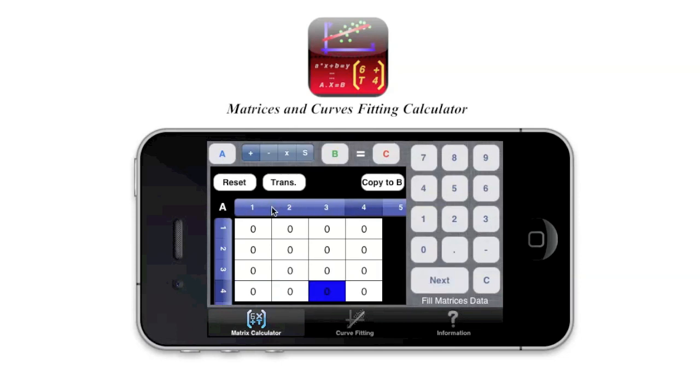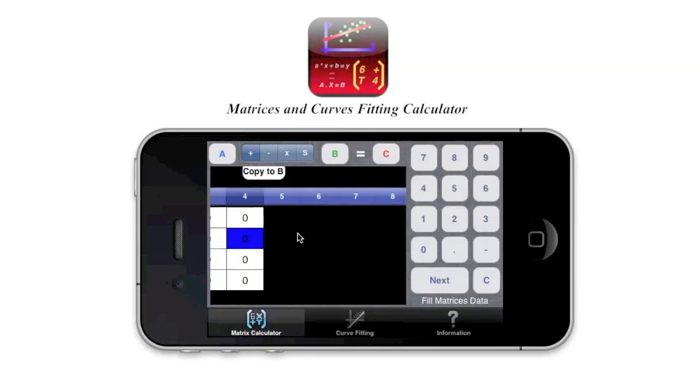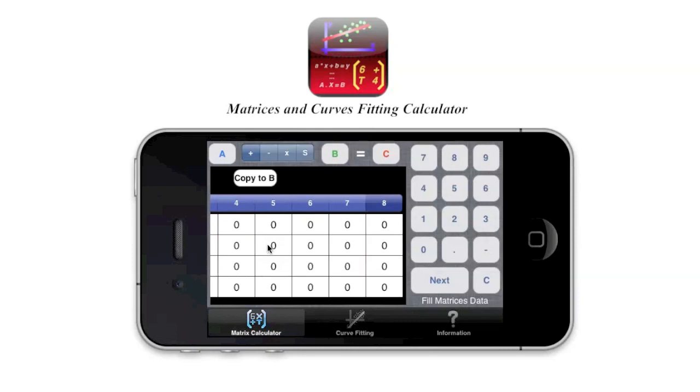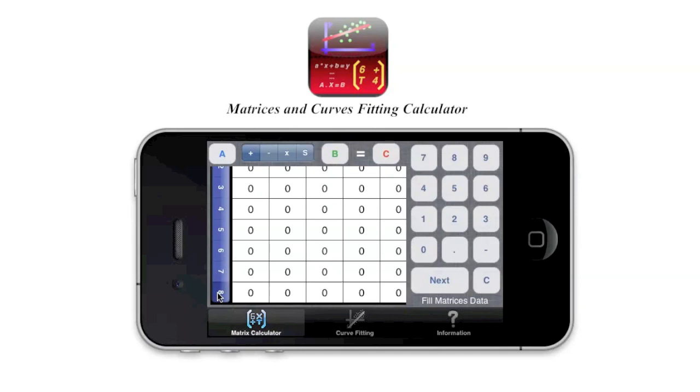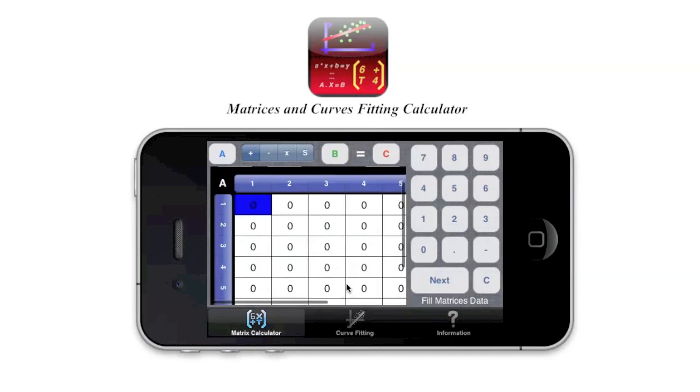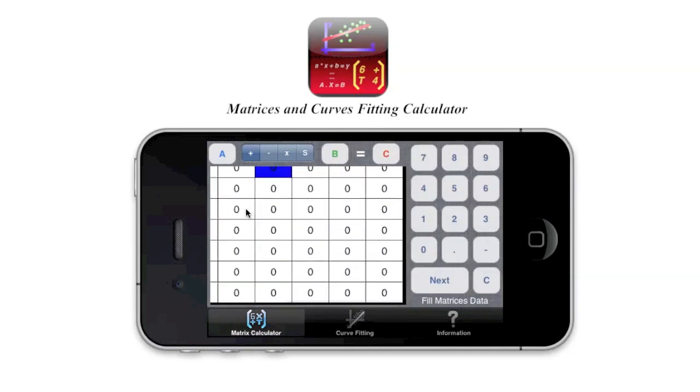Then here you have the number of columns, so you can choose two, three, four, five columns. You can go up to eight columns like here. And here you have the number of rows. You can go up to eight rows for instance. So you have big matrices like that.